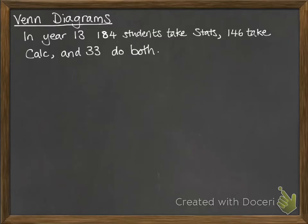Okay, so we're going to go straight into an example. It's the easiest way to show you these. So in year 13, we've got 184 students that take stats, 146 take calculus, and 33 do both of those. So I'm going to show you how to set that up as a Venn diagram.